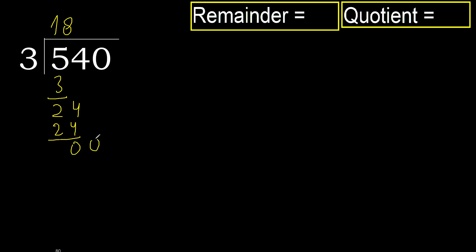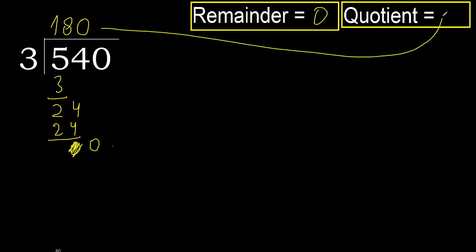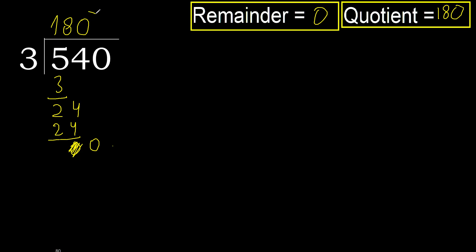Next, bring down 0. 0 is less than 3, therefore it is not a full number — complete it with 0. Always complete with 0. 540 divided by 3 is 180.